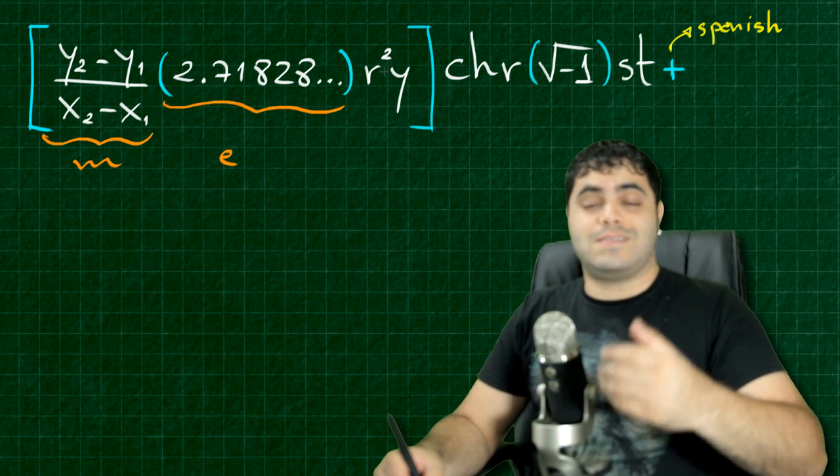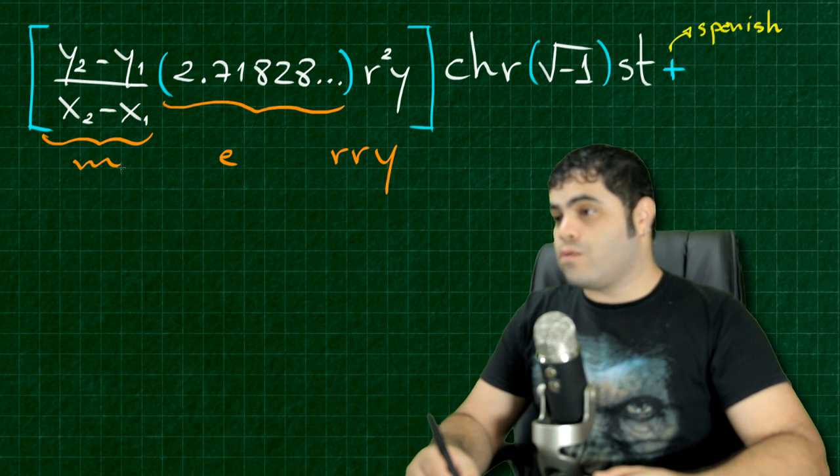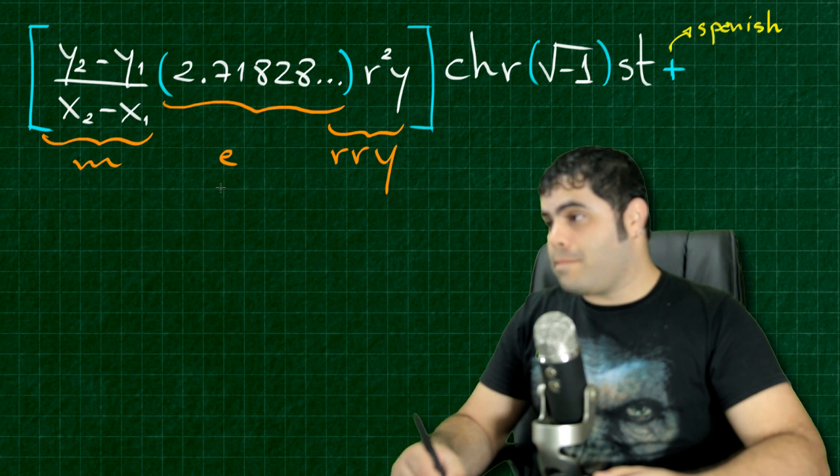R squared is R times R. So, R, R, Y. Here you can read Merry.